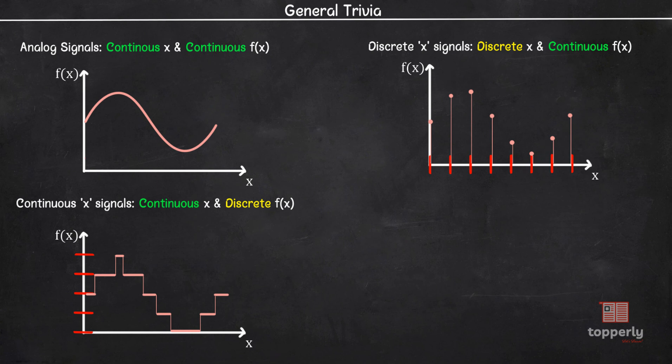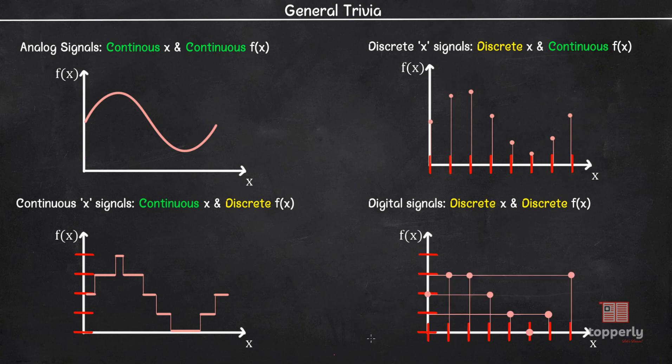Lastly, in the case of digital signals, both the variable x and f are discrete. And the graph looks like this.